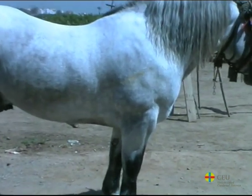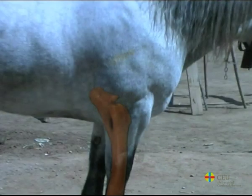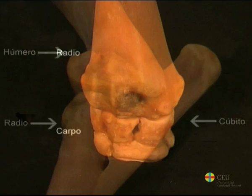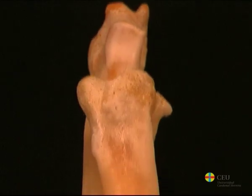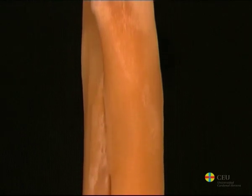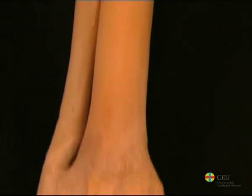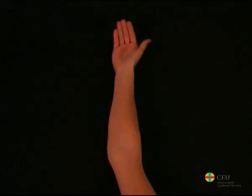The radius and ulna are two long bones that form the skeleton of the forearm. They articulate with the humerus at the proximal extremity, and with the bones of the carpus at the distal extremity. The ulna is caudal to the radius in the proximal part, but lateral to the distal part. In humans, the disposition of these bones allows pronation and supination movements.